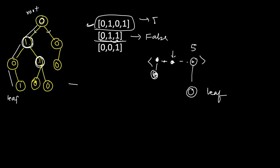This case is true because we reach both the leaf and the end of the array — one to one. Now let's see example 0 0 1: root is 0, yes. Then we have 0, so one of the nodes at the first level should be 0 — yes we have it, still valid. Then we have 1, so one of the children of this node (in this branch only) should be 1. It's not, so it's violated here and we return false.